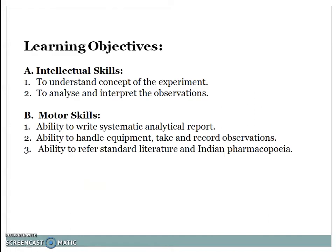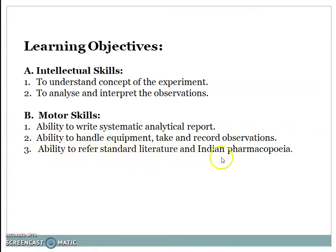Learning Outcomes. First, Intellectual Skill: to develop and understand the concept of the experiment, and to analyze and interpret the observations. Motor Skill: ability to write a systematic analytical report, ability to handle equipment, take and record observations, and ability to refer to standard literature and Indian Pharmacopoeia.